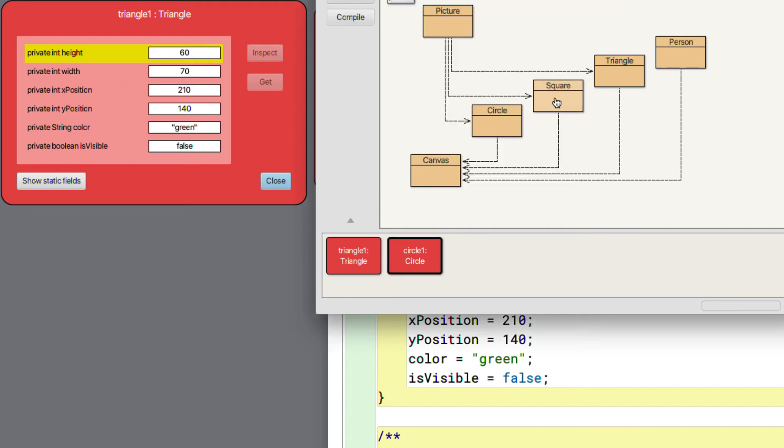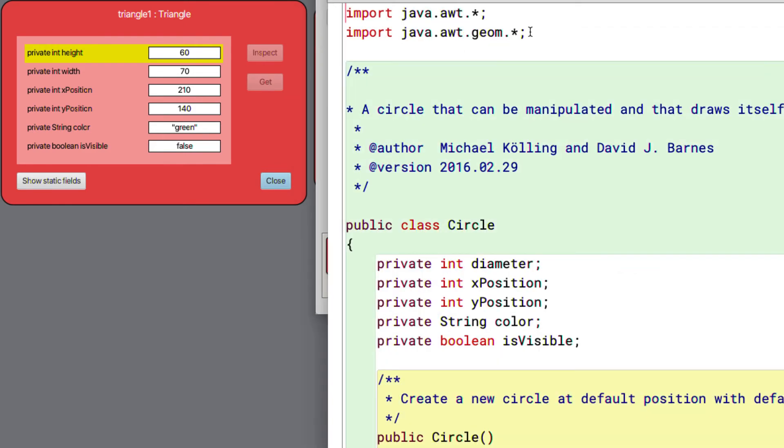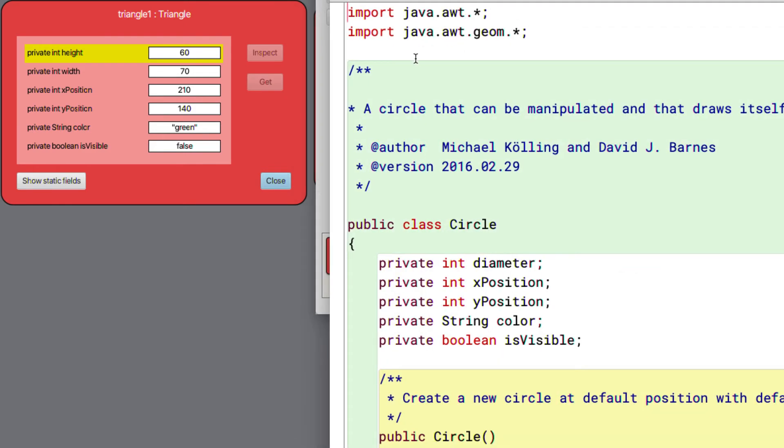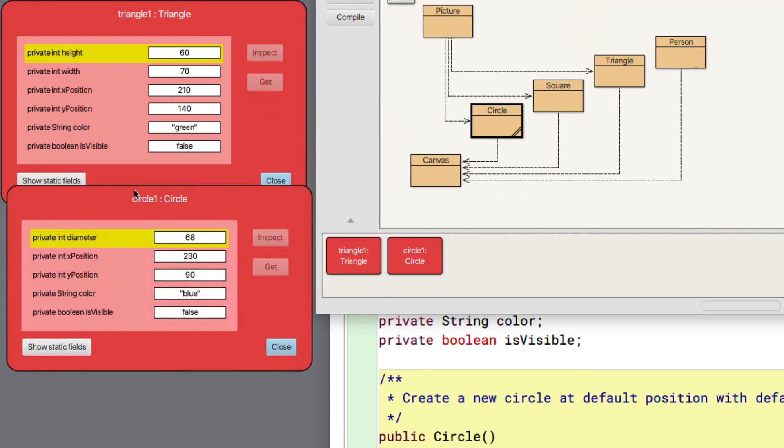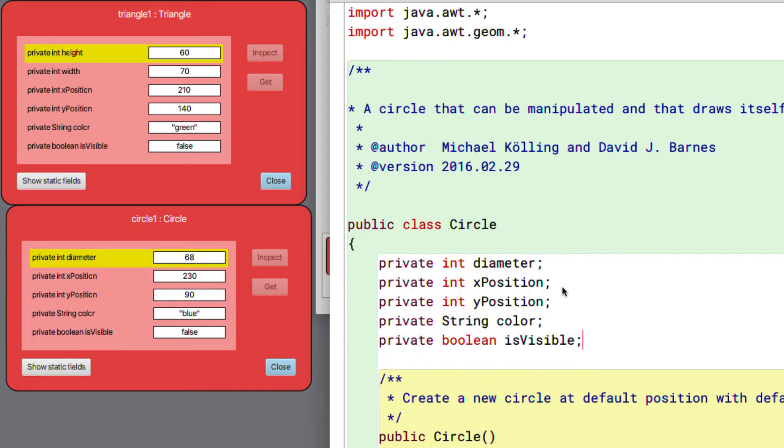We can pop up the source code of circle and just as we might expect, the elements that we see inside the source code here correspond directly to what we're seeing in the inspector over here. And again,